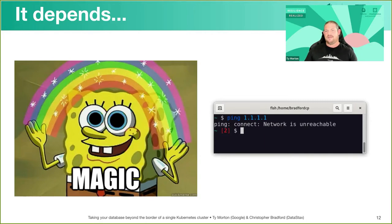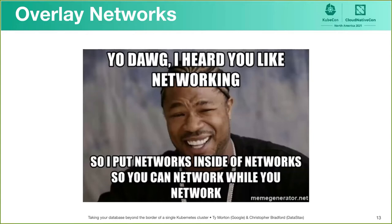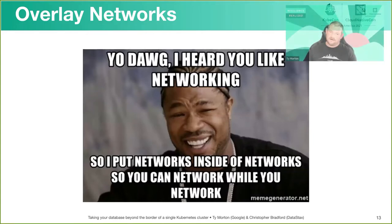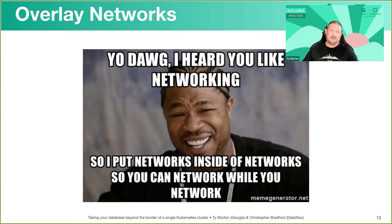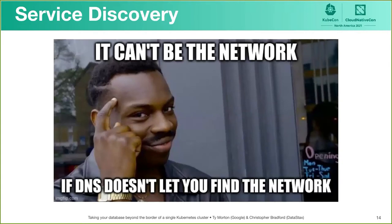An easier answer is overlay networks. In this model you build out a separate IP address space for the application — in this case the Cassandra database — and run that on top of the existing Kubernetes network, leveraging proxies, sidecars, gateways, and ingress/egress controllers as needed. Assuming we get the network in place and have appropriate routing and IP-layer connectivity between clusters, the next challenge is service discovery and DNS.